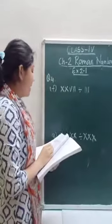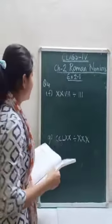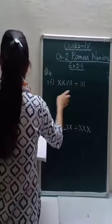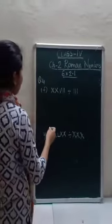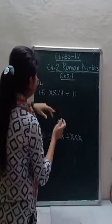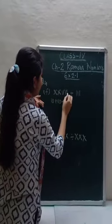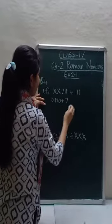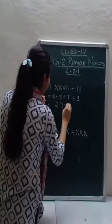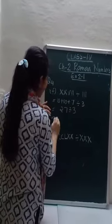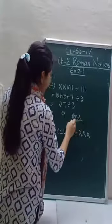Number 4: perform arithmetic operations on the following and write in numerals. We have to perform the arithmetic operation on Roman numbers and write in numerals. First, convert to Hindu-Arabic: XX is 20, plus V is 5, plus I is 1, plus I is 1 — so the number is 27. Divided by III which is 3. So 27 divided by 3 equals 9.